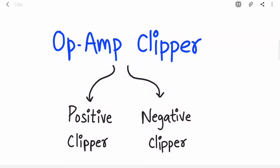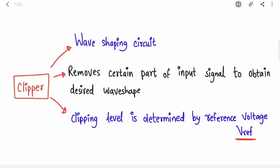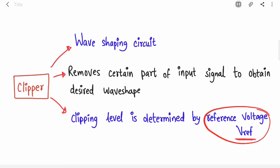Welcome back. In this video we are going to learn op-amp clippers. There are two types: positive clipper and negative clipper. We have studied clippers in earlier subjects, but these are active clippers using op-amps. A clipper is a wave shaping circuit that removes a certain part of the input signal to obtain a desired wave shape, useful in applications like digital computers, TV, and FM receivers. The clipping level is determined by the reference voltage V_ref.